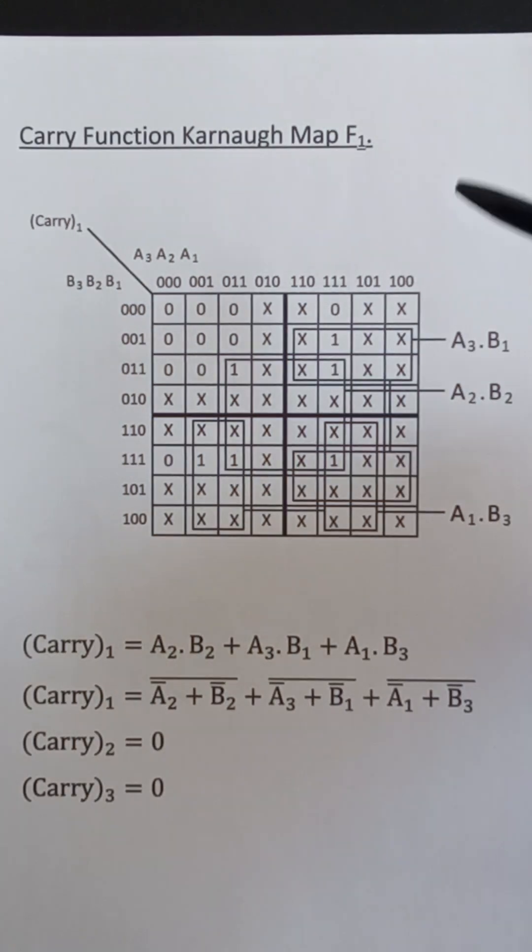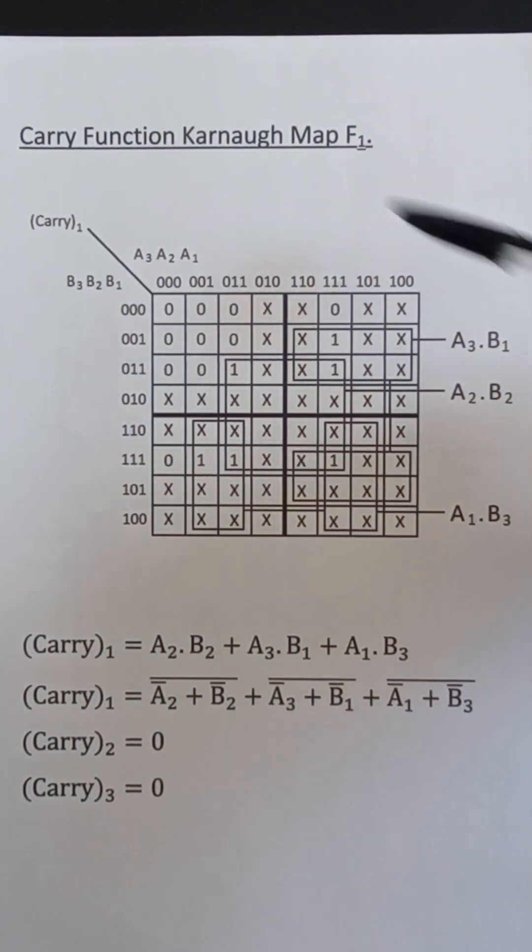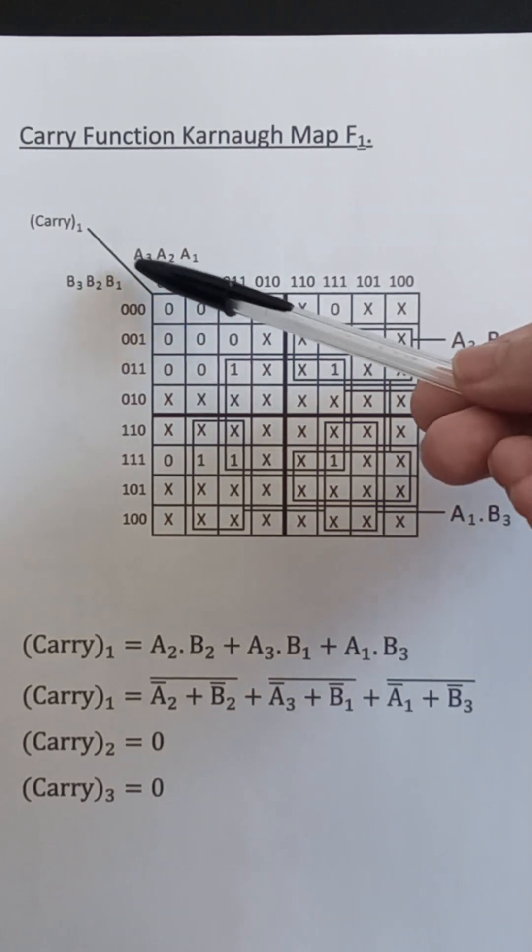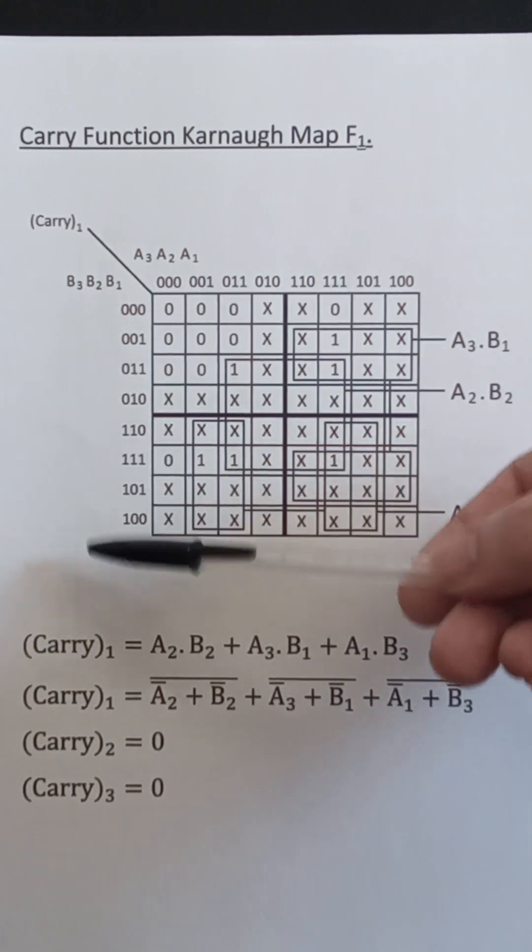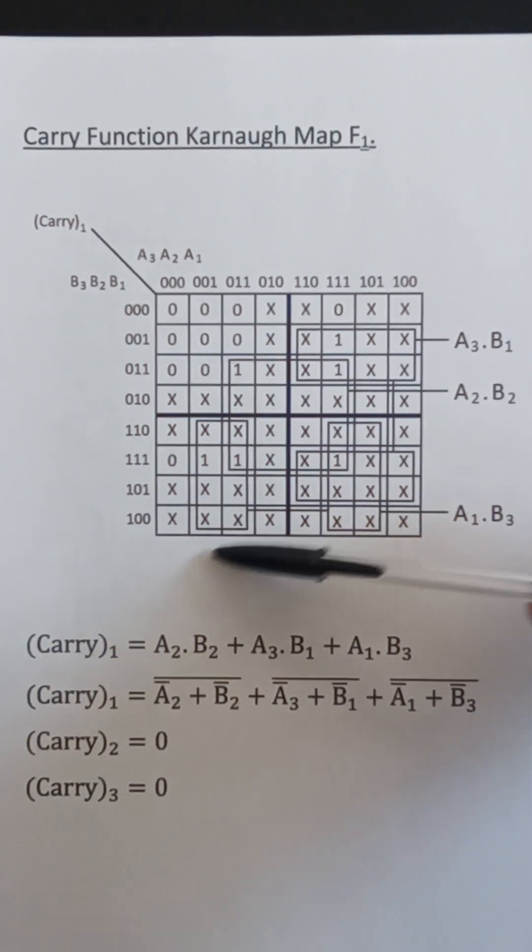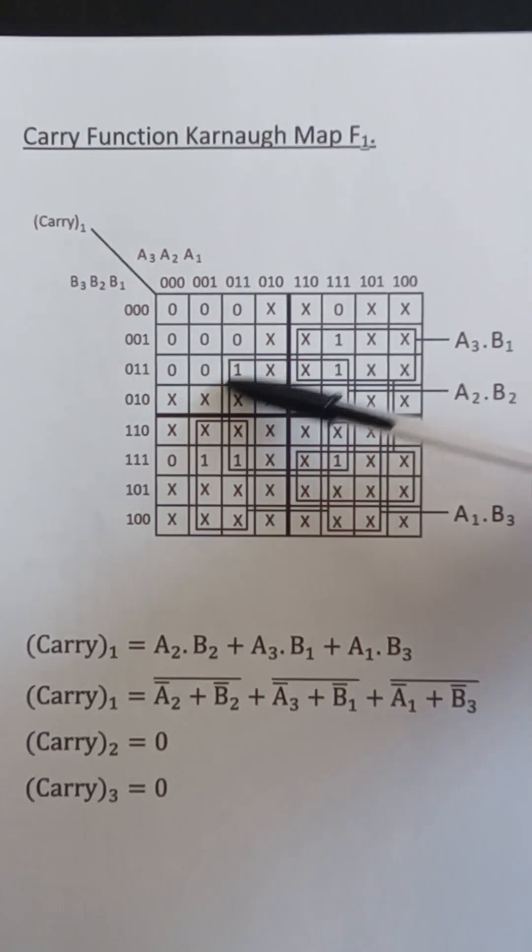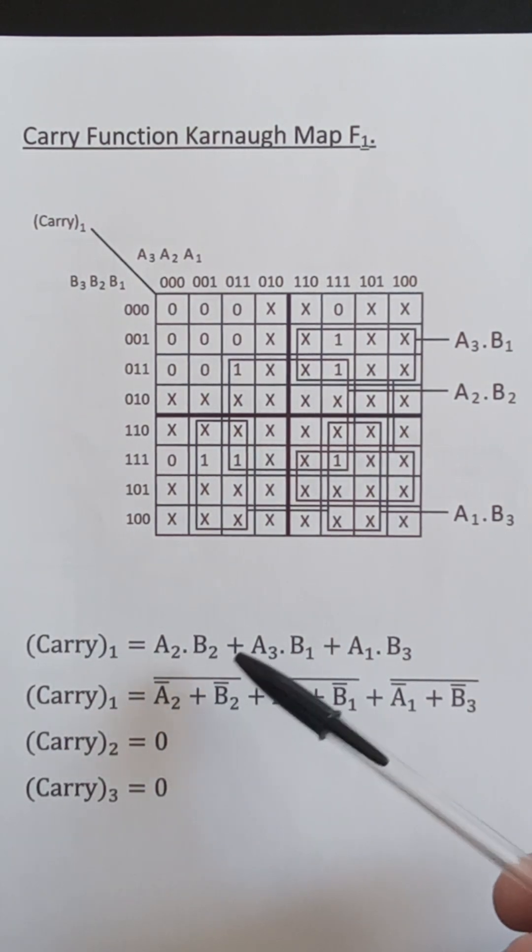This is the Karnaugh map for F1, carry1. A1, A2, A3 there for A, B1, B2, B3 there for B. And this loop here is A3 and B1. This loop here is A1 and B3. And this middle loop here is A2 and B2. So carry1 equals A2 and B2 or A3 and B1 or A1 and B3.